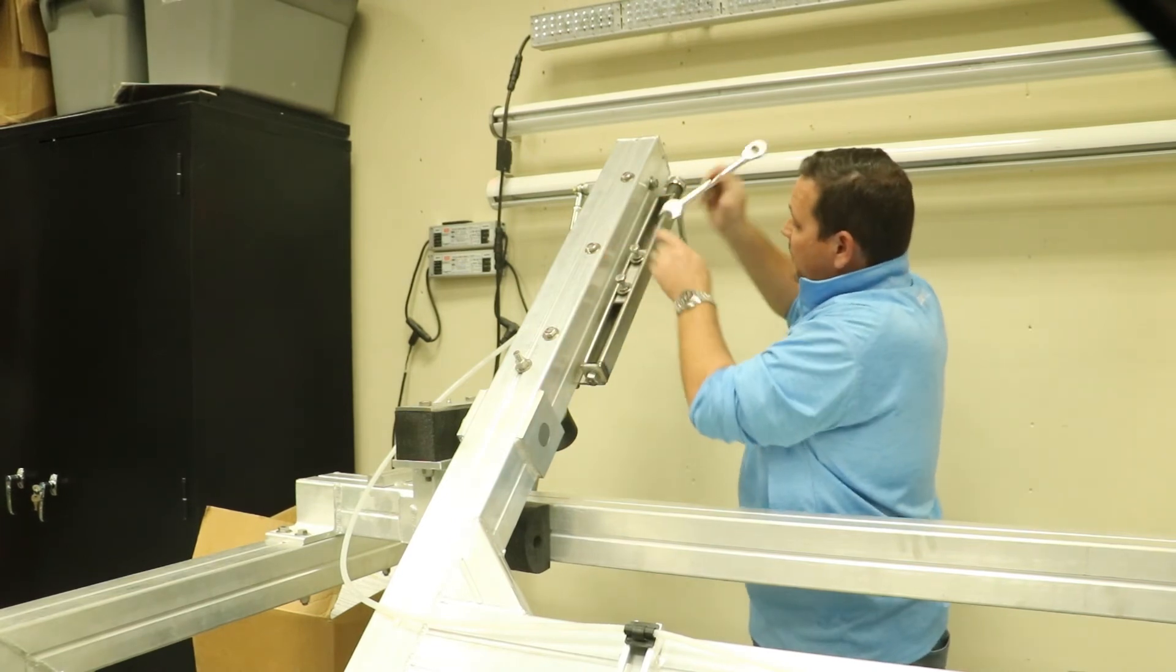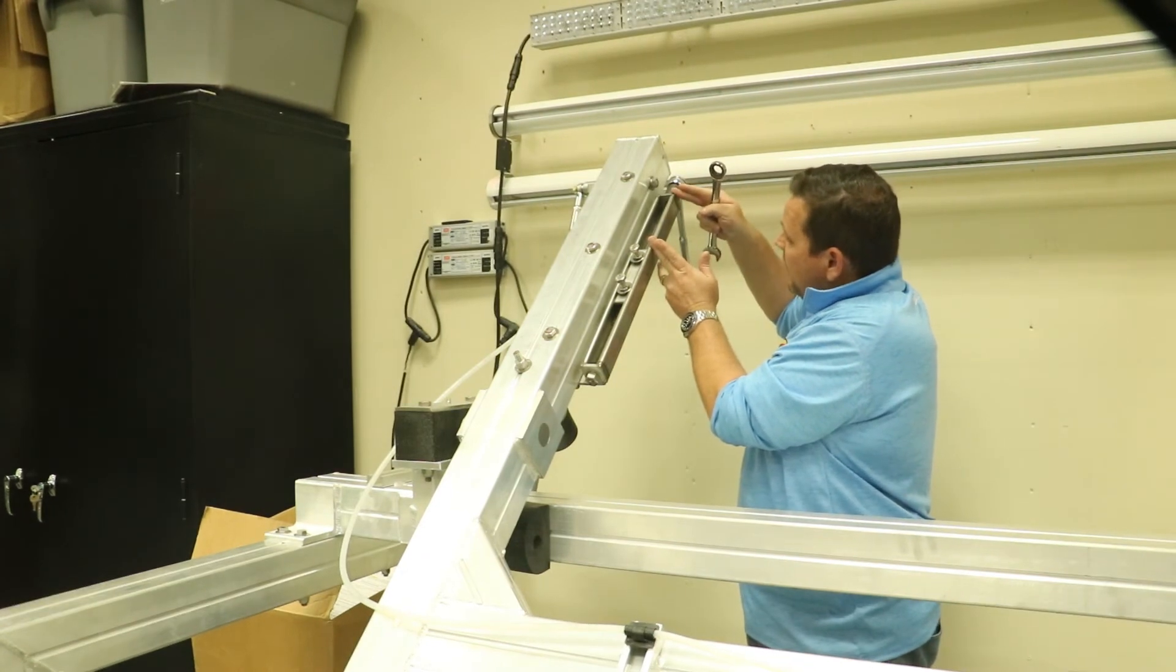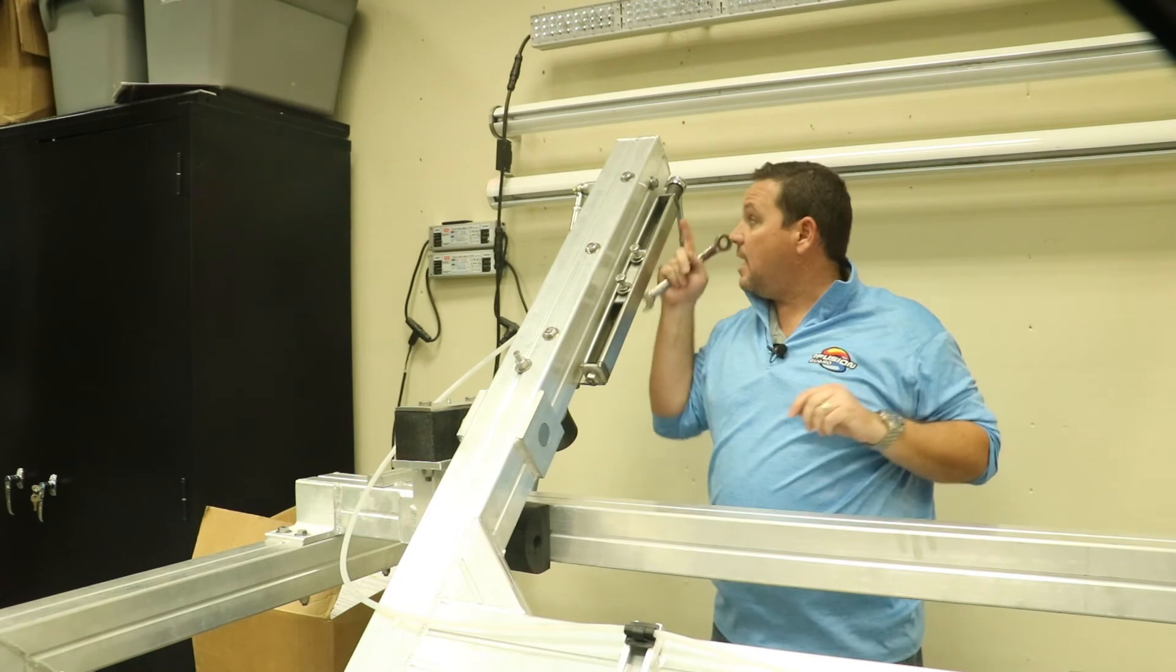The next thing you're going to do is get a tape measure. You're going to measure the distance from the end of your plate to the end of here. Whatever distance that is, you're going to go to the other side, repeat the steps, ensuring that you've got the same measurement.